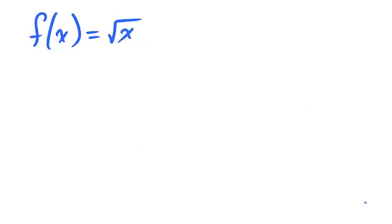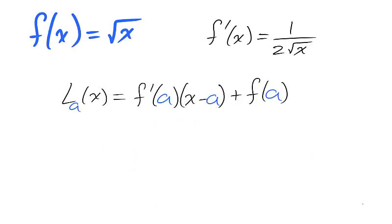Take the example of the square root function. We can find the linearization by first finding the derivative. For any x value a, in which f is differentiable, we can find the linearization of the square root function.